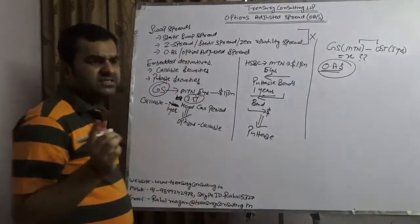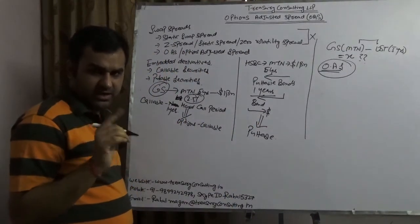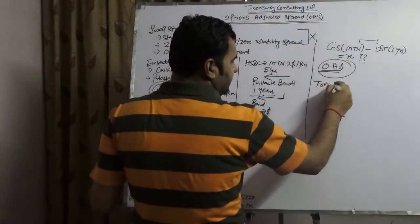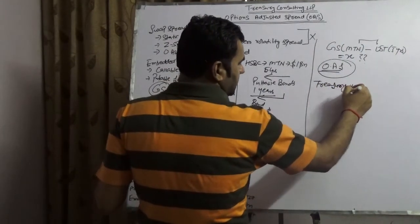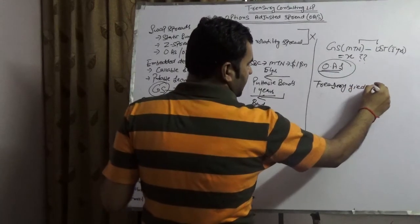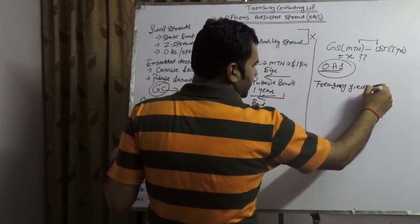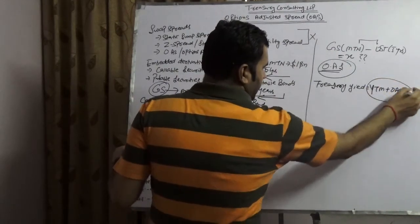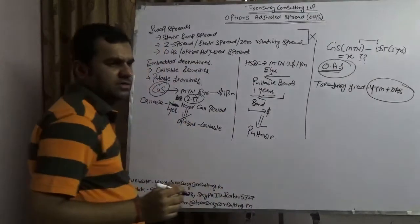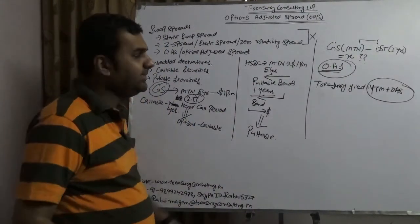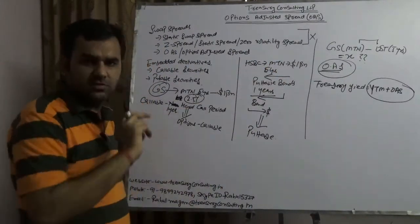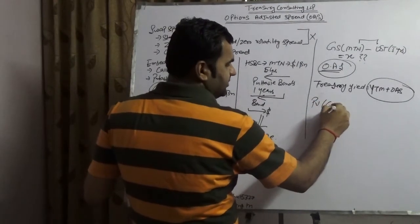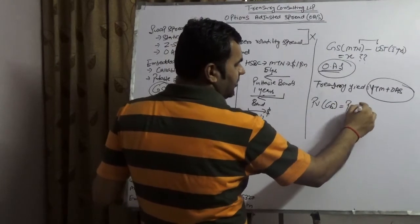What exactly it meant is that in this spread, which is known as options adjusted spread, you have to add a spread in the treasury yield. Say which is yield to maturity plus OAS.